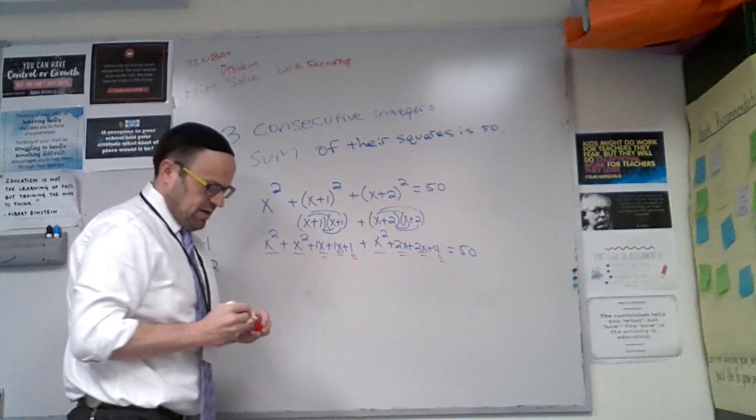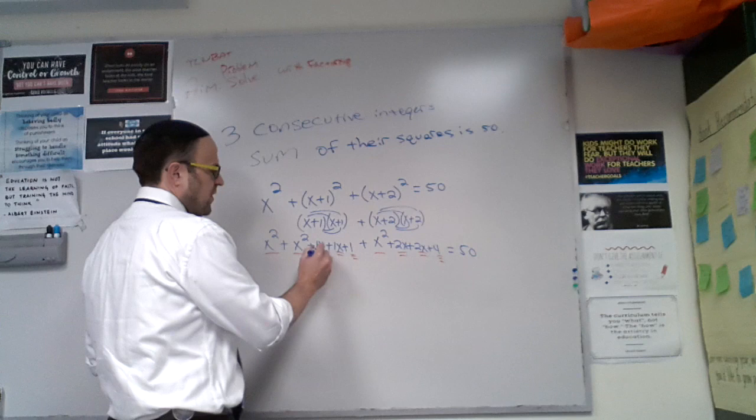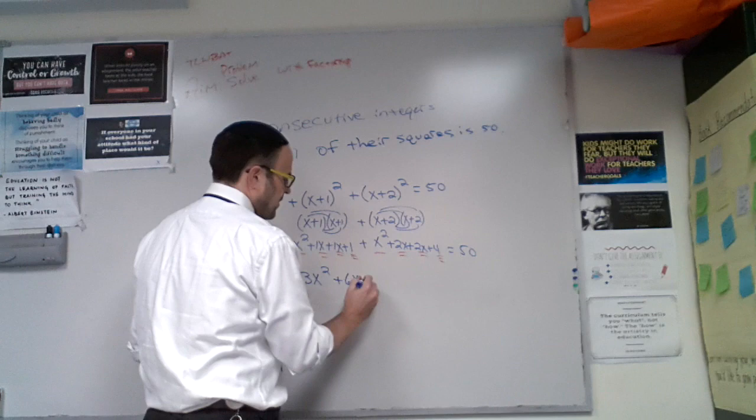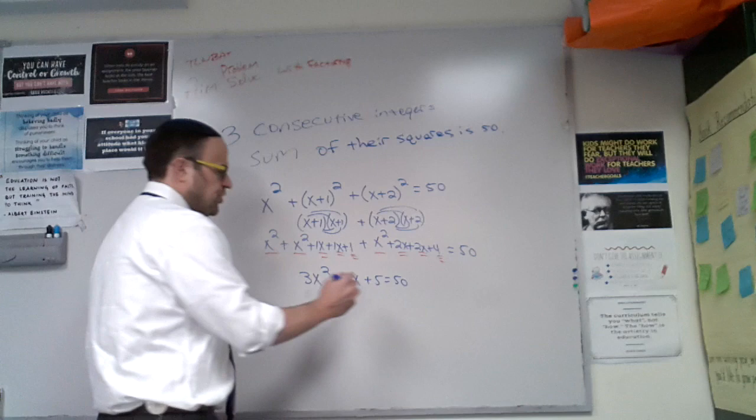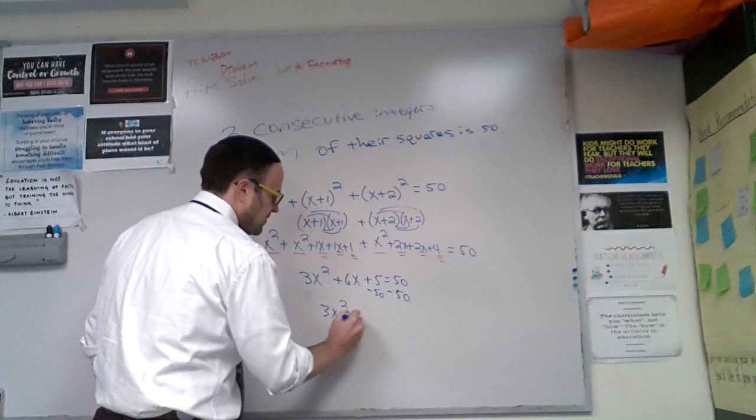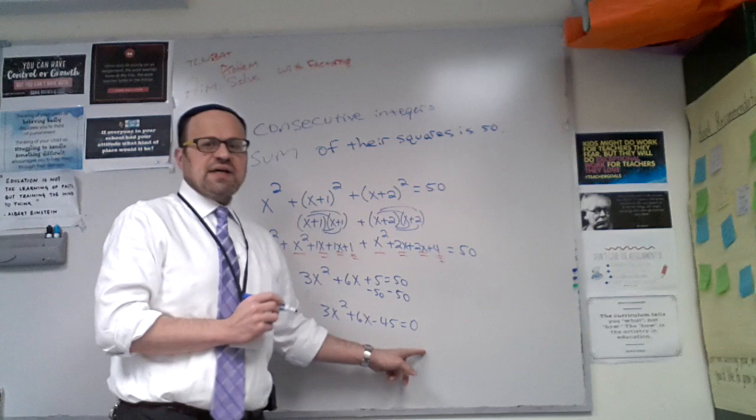X² + x² + x² gives me 3x². 1x + 1x + 2x + 2x gives me 6x. 1 + 4 is 5. Okay, we've been doing a bunch of these types of problems. They should look pretty familiar. You should be thinking subtracting 50 from both sides so that we can get one side equal to 0.